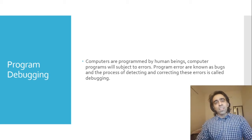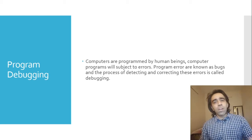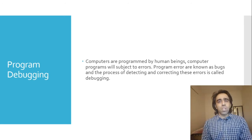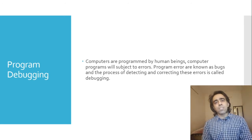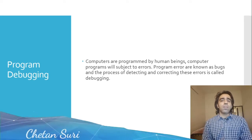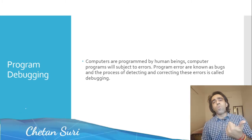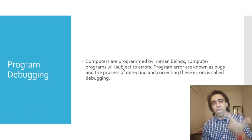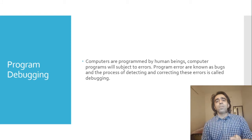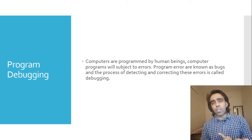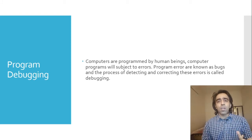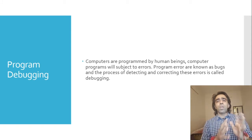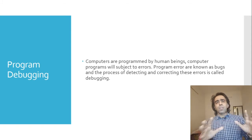Good morning students. We are continuing with computer programming using C, Chapter One. We have learned about what is a program, the steps for developing a program, what is an algorithm, what is a flowchart, and what symbols are used to create a flowchart.